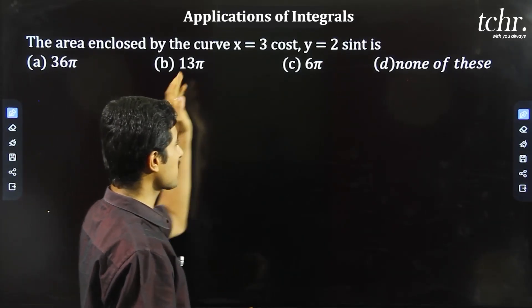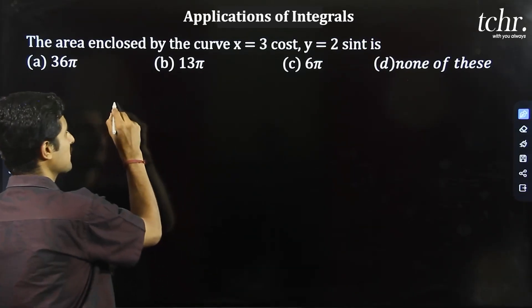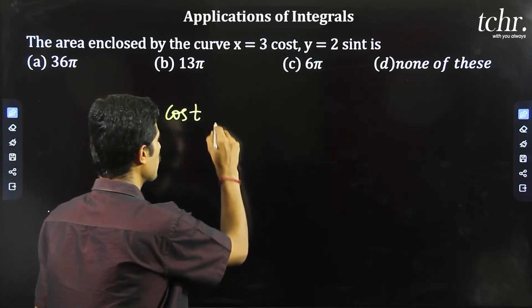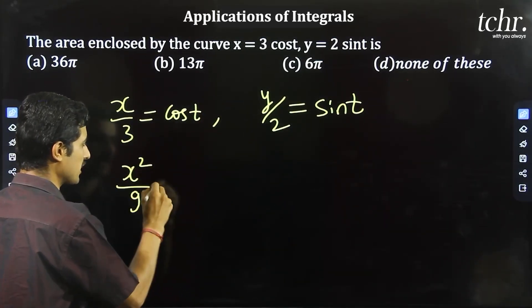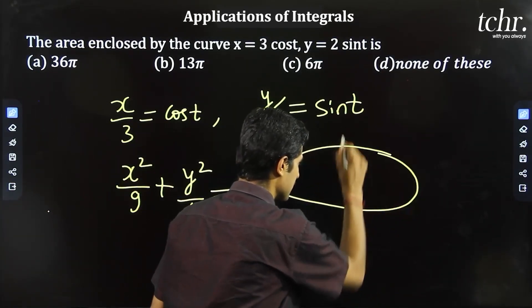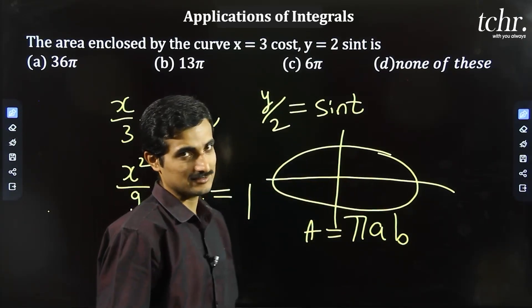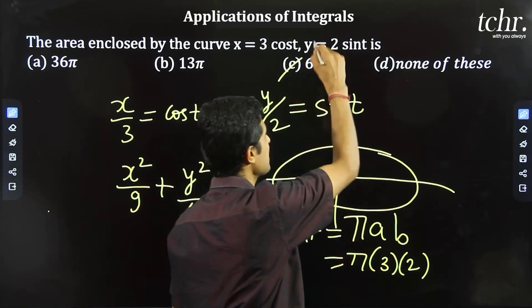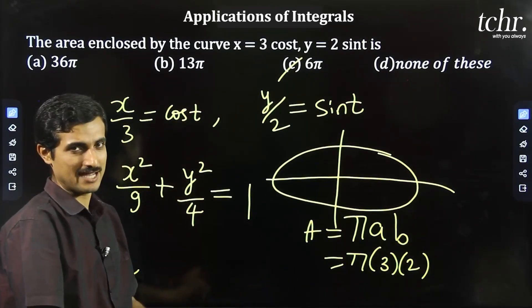Next, the area enclosed by the curve x equal to 3 cos t, y equal to 2 sin t. This is actually a parametric equation of an ellipse. x by 3 is cos t, this format. Similarly, y by 2 sin t. So parametric equation of ellipse. Squaring and adding: x square by 9 plus y square by 4 is equal to cos square t plus sin square t, that is 1. Again, you get equation of ellipse. Equation of ellipse, pi a b, area of the ellipse. pi into a into b, again 6 pi square units, is the final answer, that is the area bounded by the ellipse. Even parametric form, within 20-30 seconds, answer comes.